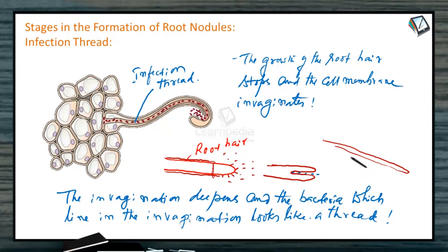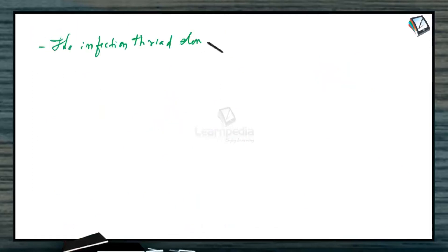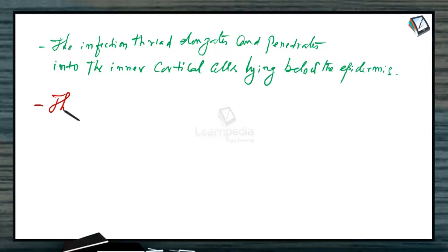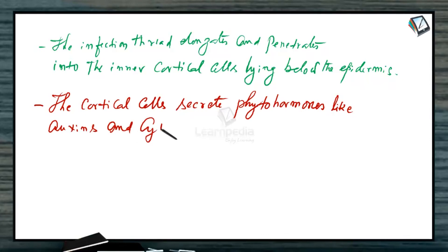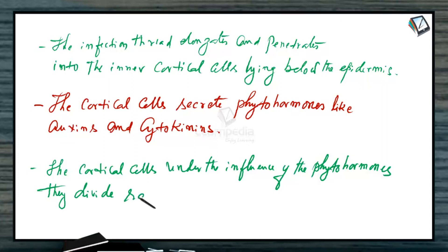As the infection thread deepens like this, the bacteria are in a line and this is the infection thread. The infection thread elongates and penetrates into the inner cortical cells lying below the epidermis. The cortical cells secrete phytohormones like auxins and cytokinins. The cortical cells under the influence of the phytohormones, they divide rapidly leading to the development of a young nodule.